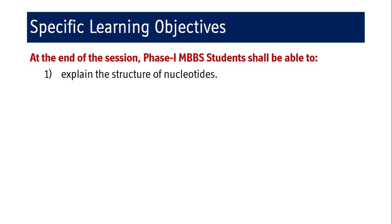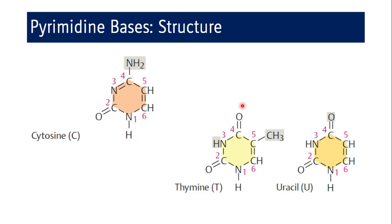This is a short video covering the structure of nucleotides. We will cover pyrimidine bases first and purine bases after, because pyrimidine structure is simpler compared to purine. Once you understand pyrimidine structure, it will be easy to understand purine structures as well. Coming to the pyrimidine bases: cytosine, thymine, and uracil.